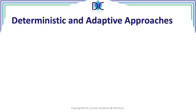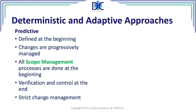Let's have a look at the differences between the deterministic and adaptive approaches. When we look at a predictive approach, all the elements — the entire scope — is defined at the beginning. Changes that may occur are managed progressively through the project following a clear change management process. All scope management processes are done at the beginning, verification and control is at the end, and management of changes follows a strict schedule. That's typically a predictive environment.